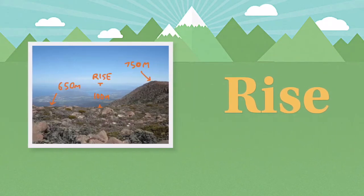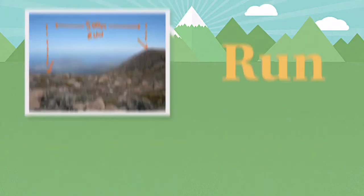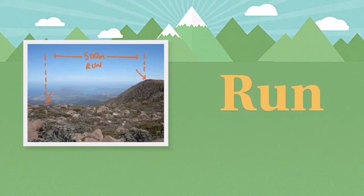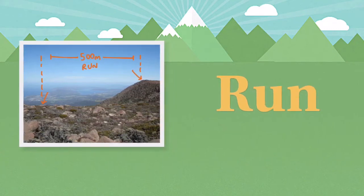Rise is the difference in height between two points, as seen in our example here 100 metres, whereas run is the distance between those two points. On a map you may need to convert this to real distance using a scale.